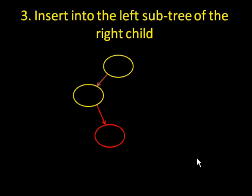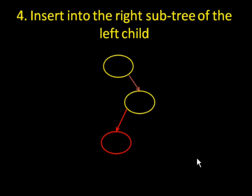Into the left subtree of the right child, it would look like this, and into the right subtree of the left child, it would look like that. And what I mean here is that the top one here would be unbalanced, and your new element that you just added would be down here.